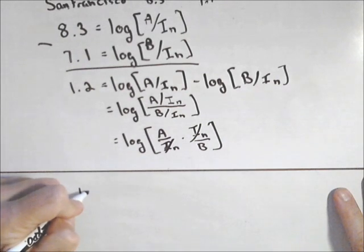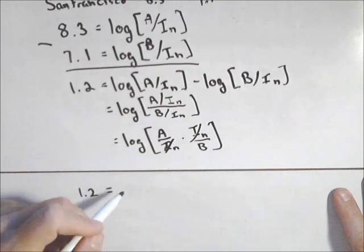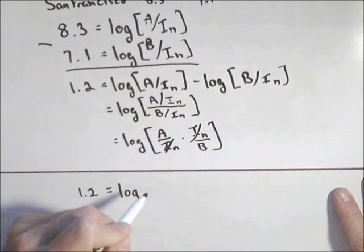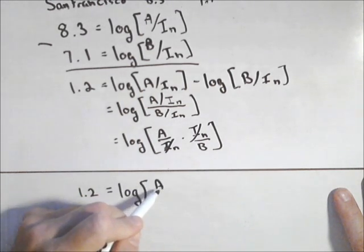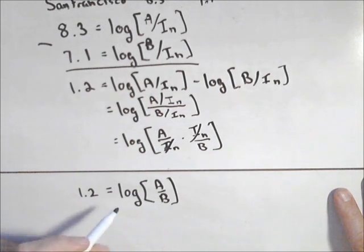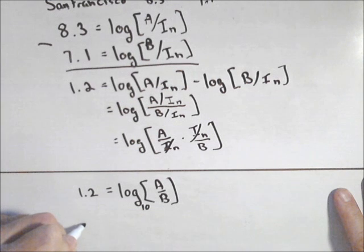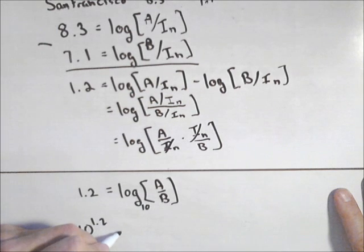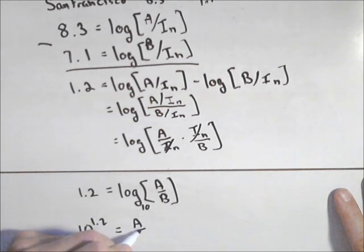We have that 1.2, that was our difference in the Richter scale measurements, is equal to log of A over B. And so we can solve this by making both sides exponents of 10 or rewriting as an exponential: 10 to the 1.2 equals A over B.